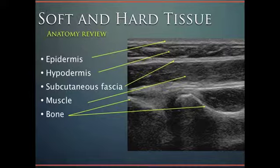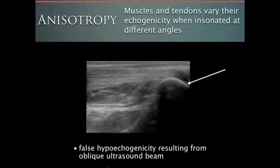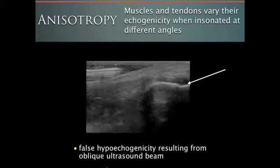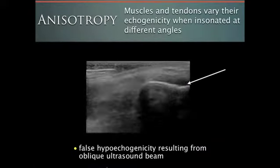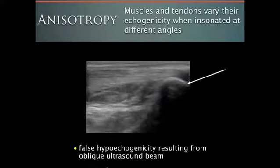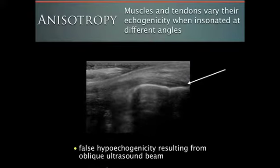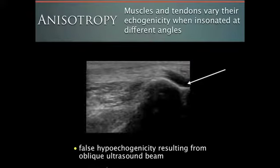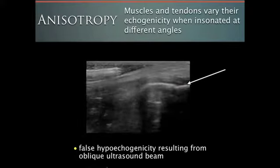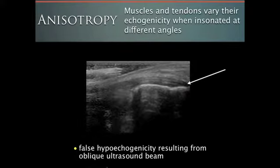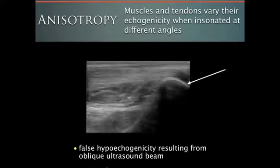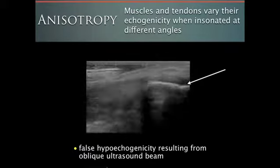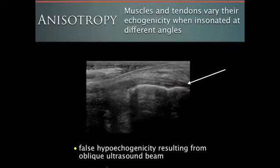Bone is very dense, very hyperechoic, and therefore it reflects the sound. There's also the concept of anisotropy: when you have muscles and tendons, depending on which angle you insoniate them, you can have variations in their echogenicity.